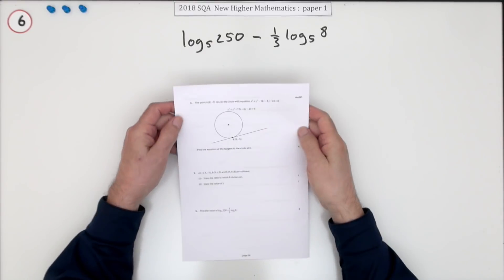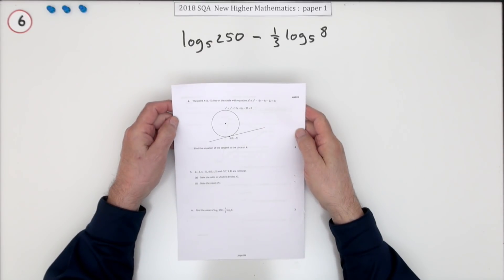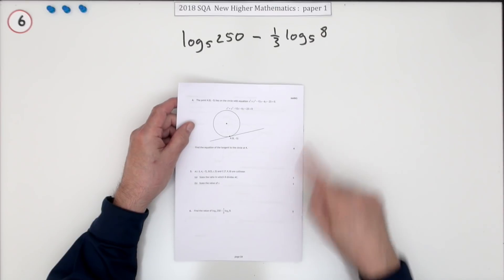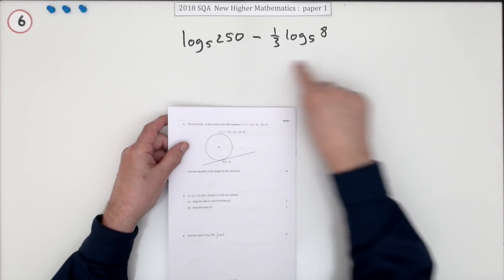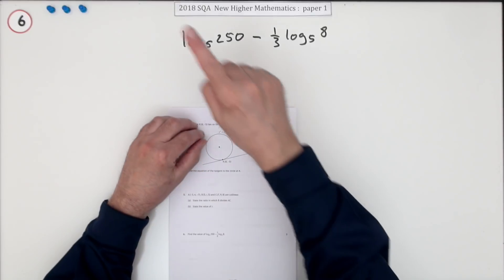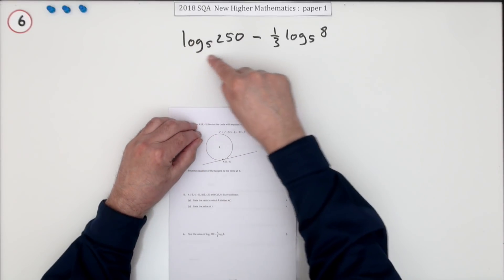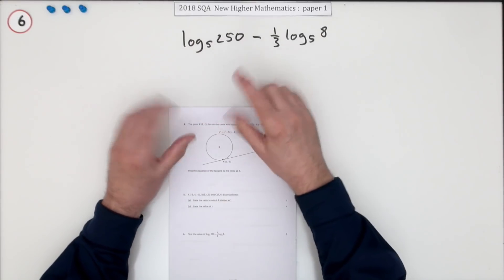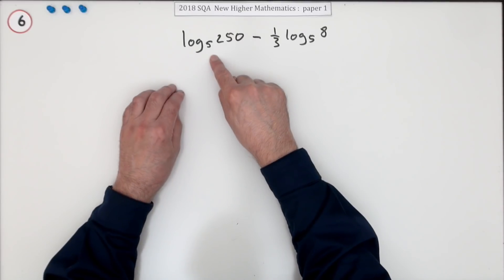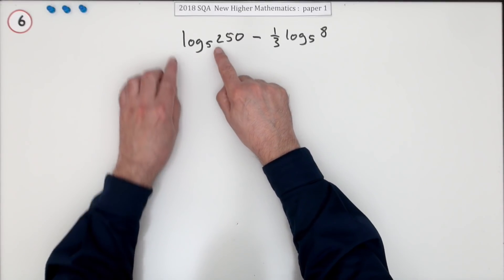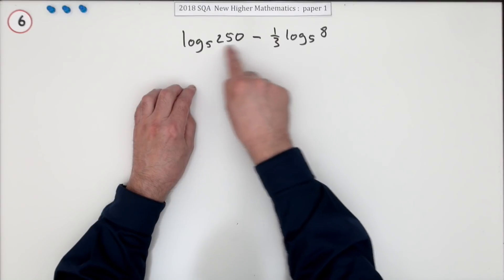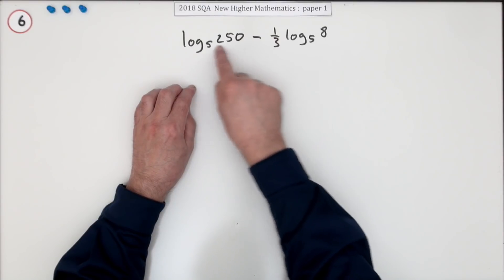Number six from the 2018 SQA Higher Maths paper one — a little three-mark question on logs. All you need to know is just what a log does. A log says: what power of its base produces the number it's operating on?